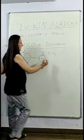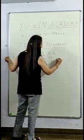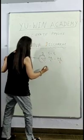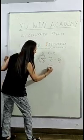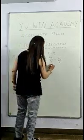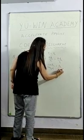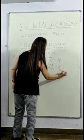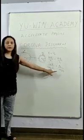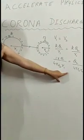The potential of sphere 1 after redistribution: V1 = KQ1/R1. We can write it as Q1/(4π ε₀ R1), and V2 = Q2/(4π ε₀ R2). Since V1 = V2, we have KQ1/R1 = KQ2/R2.